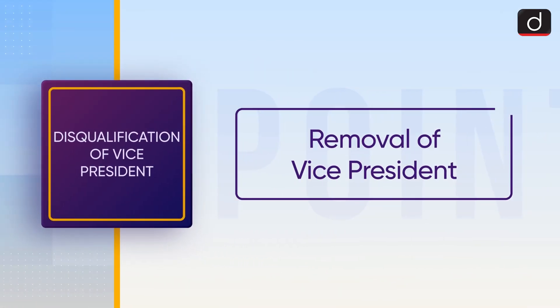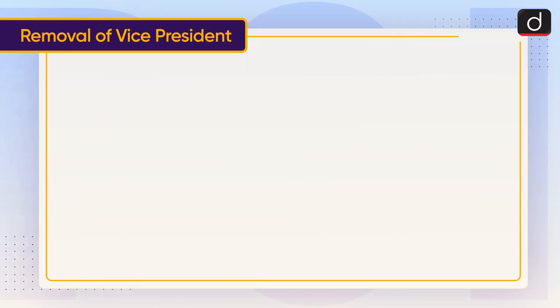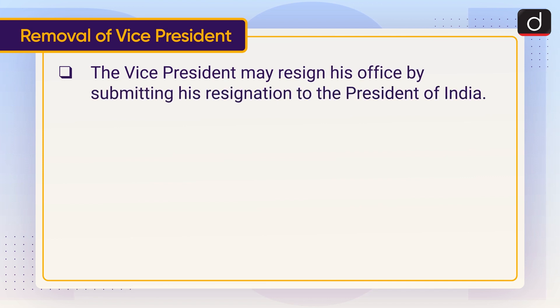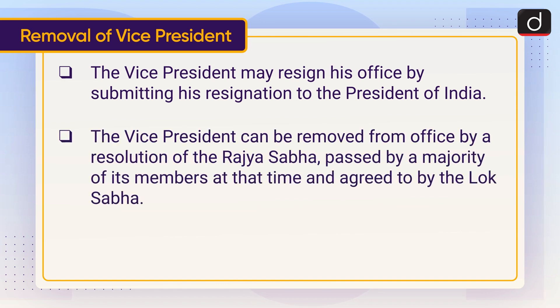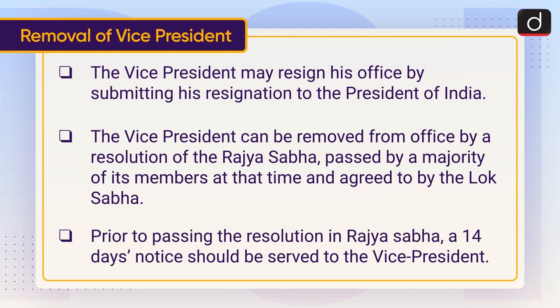Now let's discuss about the removal of the Vice President. The Vice President may resign his office by submitting his resignation to the President of India. The Vice President can be removed from office by a resolution of the Rajya Sabha passed by a majority of its members at that time and agreed to by the Lok Sabha. Prior to passing the resolution in Rajya Sabha, a 14-day notice should be served to the Vice President.